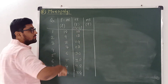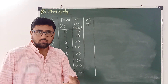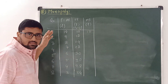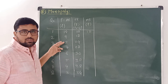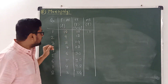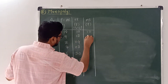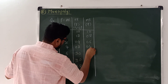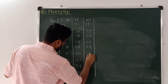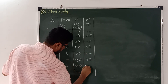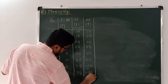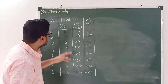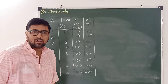Marginal revenue is the change in total revenue. So MR values are: 10, 8, 6, 4, 2, 0, minus 2, minus 4.